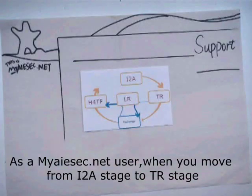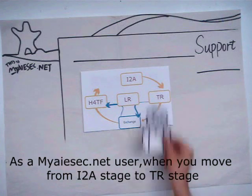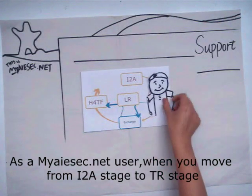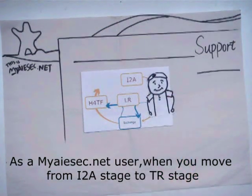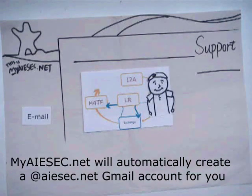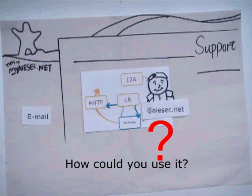As a MyEffect.net user, when you move from the Introduction to ISEC stage to the Taking Responsibility stage, MyEffect.net will automatically create an @ISEC.net Gmail account for you. How could you use it?